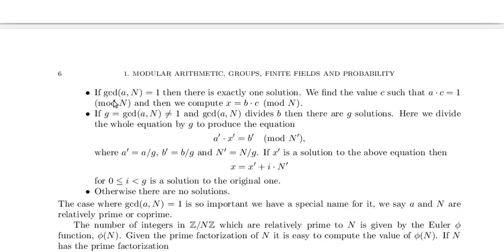If the GCD of a and n is 1, then there is exactly one solution. We find the value c such that a times c equals 1 mod n, and then we compute x equals b times c mod n.